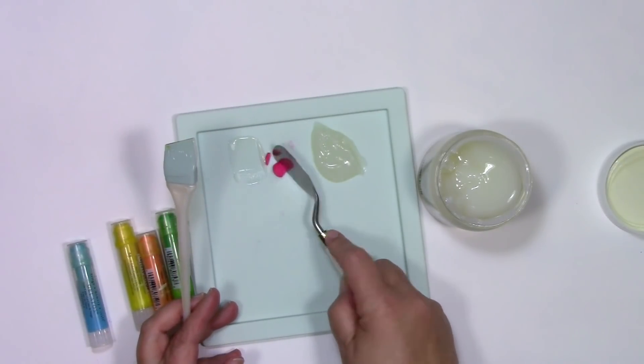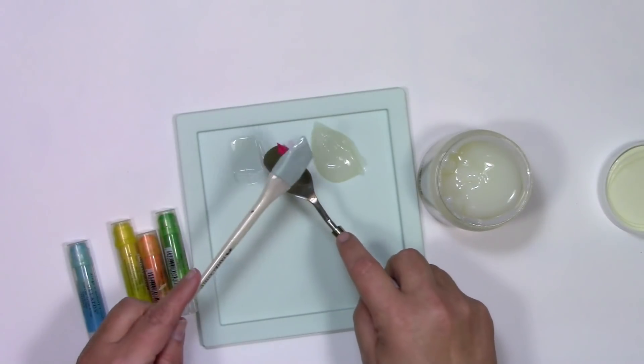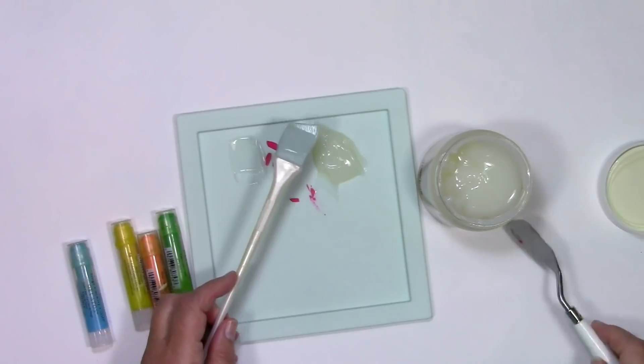What you're seeing me do right now is break apart the piece that I sliced off. It was one solid piece, and it's easier to mix in if you have smaller pieces.